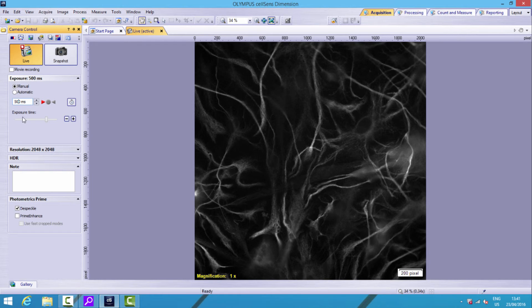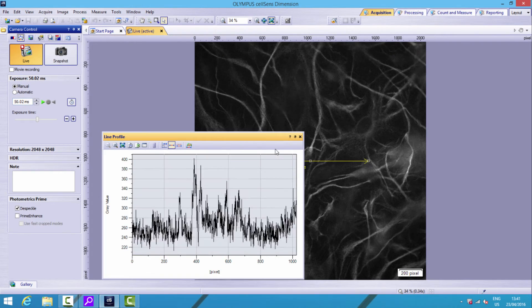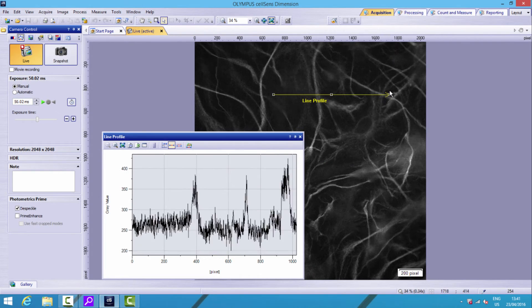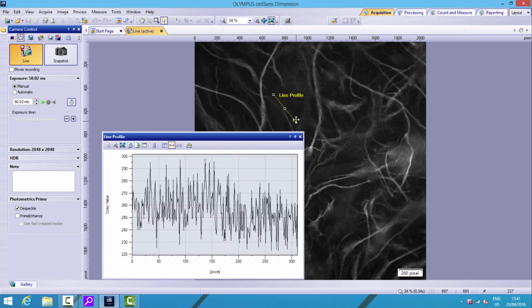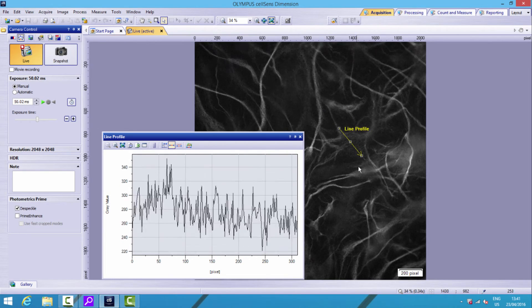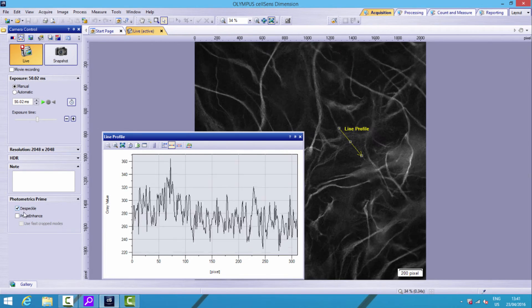So let's start off by reducing this. We want to go to 50 milliseconds. That's much more like it. We can see the noise there. Majority of that is shot noise. Let's put a line profile on. It's a good way to show this. Put the line profile on, drag it over an area of structure.